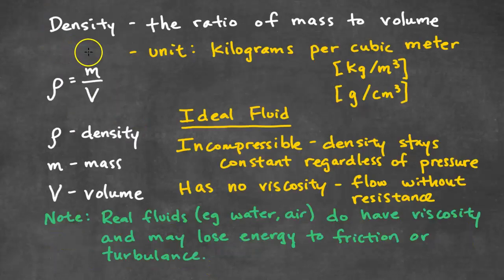Density is the ratio of mass to volume. It is measured in kilograms per cubic meter. It can also be measured in the units of grams per cubic centimeter. The equation for density is rho equals m over v. Rho is density, m is mass, v is volume.